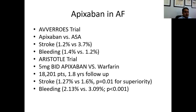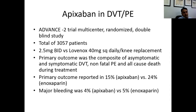The ARISTOTLE trial used apixaban 5 mg twice daily versus warfarin targeting an INR of 2 to 3 in 18,000 patients with non-valvular atrial fibrillation, with one and a half years of follow-up. The risk of stroke was reduced in the apixaban arm at 1.27% versus 1.6% in the warfarin arm — a highly significant p-value. The bleeding risk was also lower in the apixaban arm compared to the warfarin arm, again with a highly significant p-value.